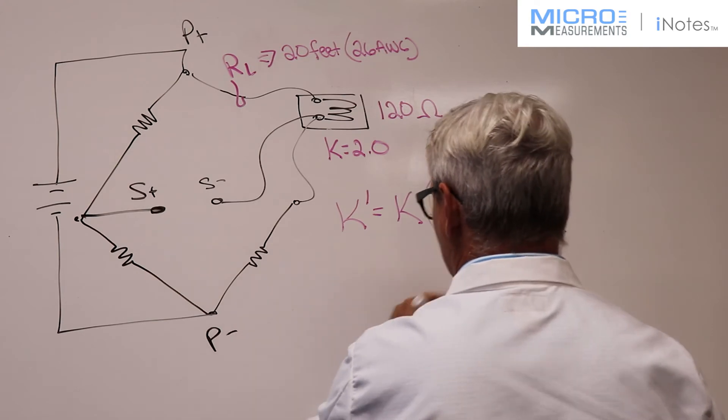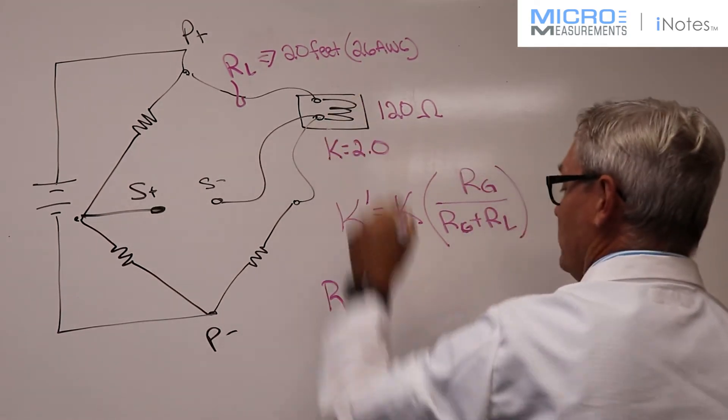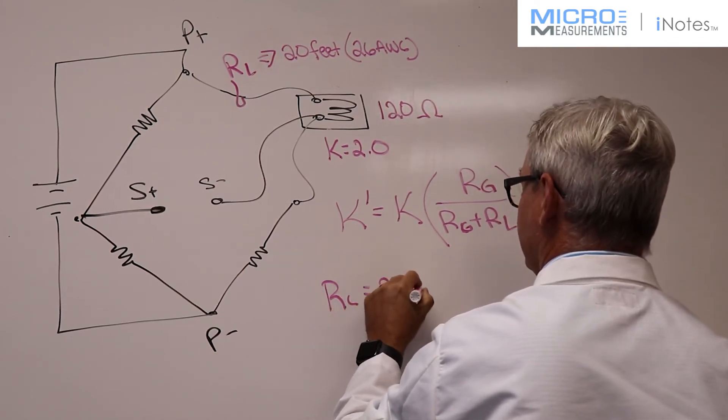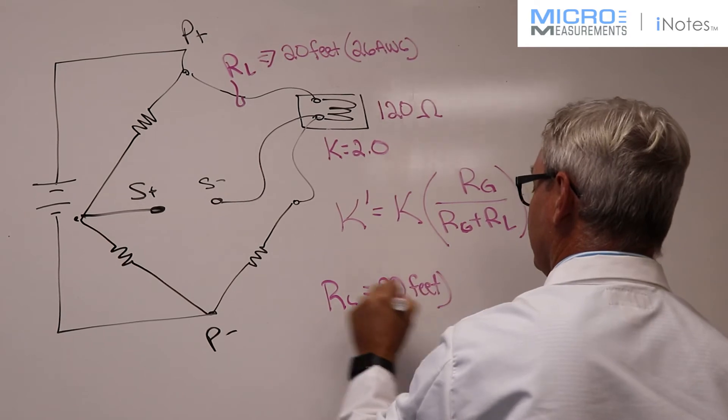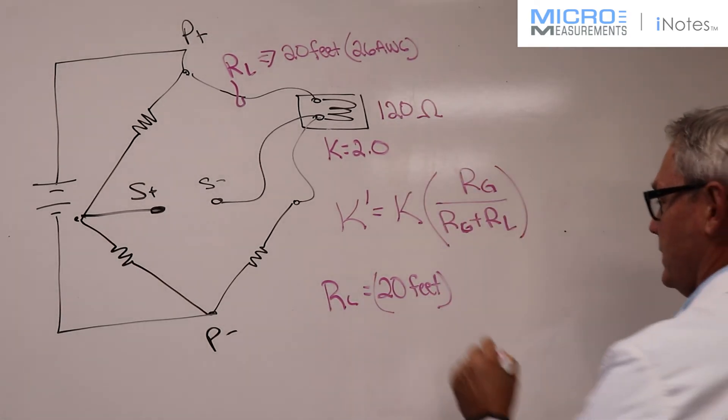So if we do a little bit of the math here, the resistance of the lead wire, remember we said it's 20 feet. And if we assume it's a 26 gauge wire, it has a resistance per foot of about 0.042 ohms per foot.